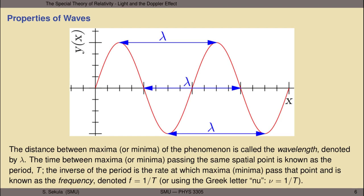The period is the time between the same thing happening over and over again in the wave phenomenon. The inverse of the period, one over T, is the rate at which maxima pass a given point, and it's known as the frequency. It can be denoted by the lowercase letter f, which equals one over T, or by the Greek letter nu, which looks like a little curved V. Frequency has units of per second, or Hertz.